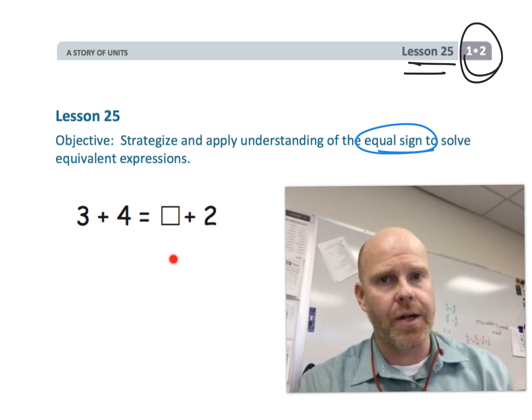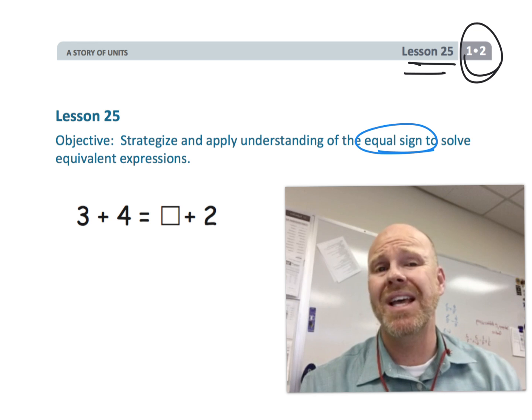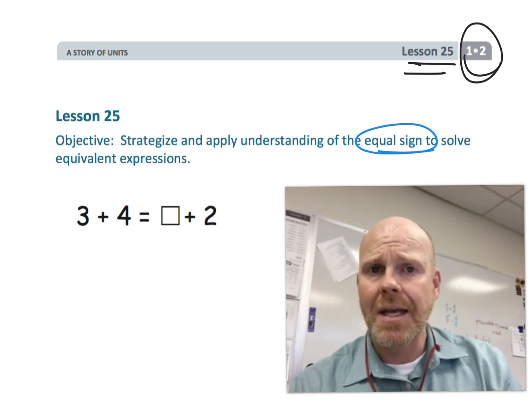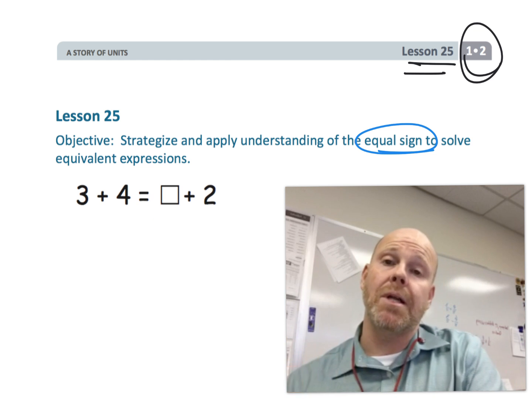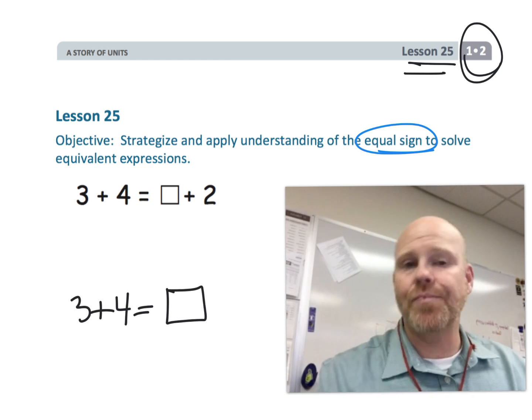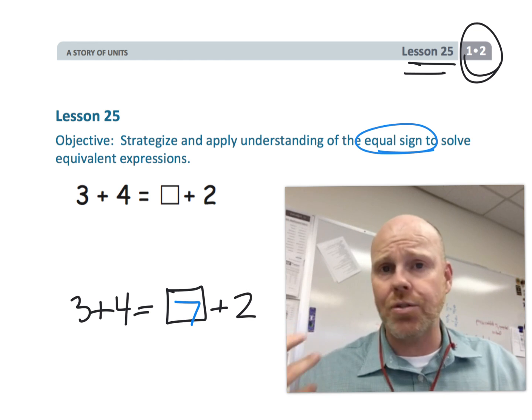A very common wrong answer is to put in that box 7. But 7 is not right because that would be saying 3 plus 4 is equal to 7 plus 2, or 7 is equal to 9, and that's just not true.